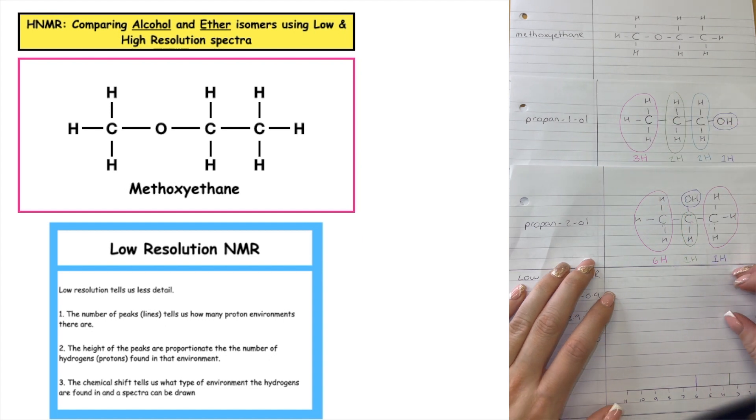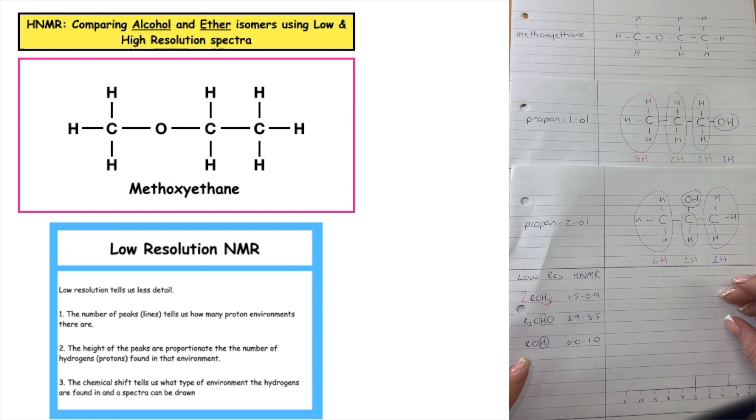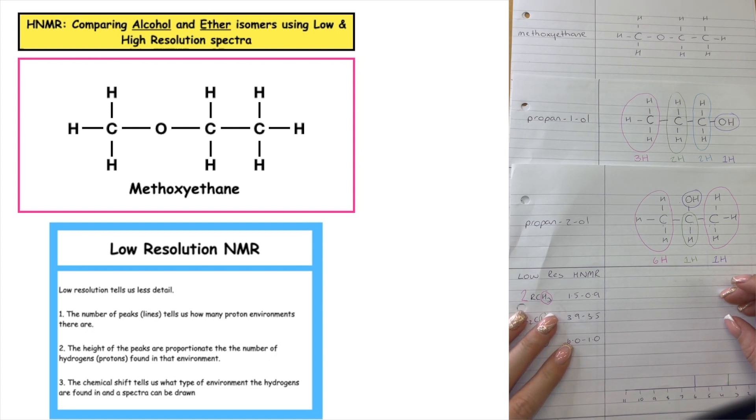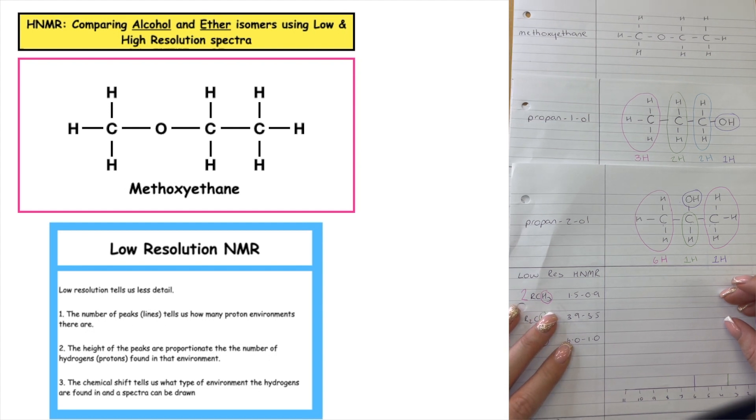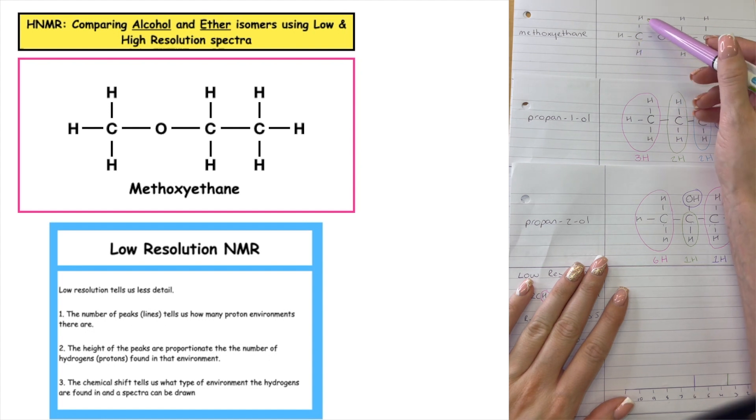The purpose of this is to show that proton NMR, using the number of proton environments and both low resolution and high resolution proton NMR for each example, will allow us to identify between isomers of each of those. We can see that for this example here, we're going to use methoxyethane, which is an isomer of propane-1-ol and propane-2-ol.